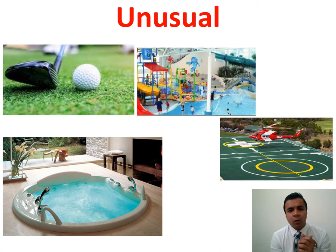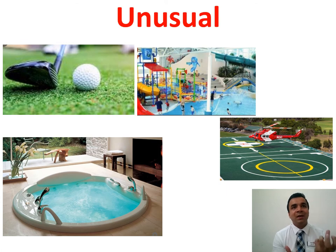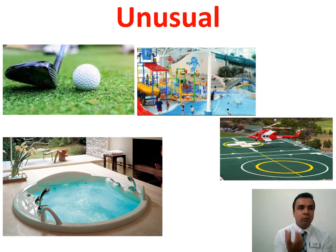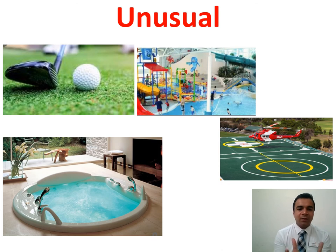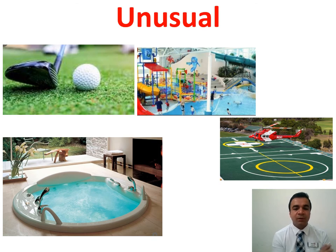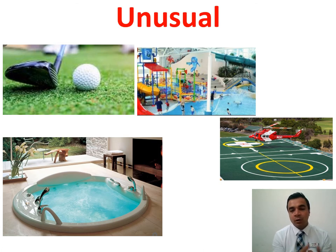The fourth type is unusual complaints — these are complaints that are not usual and the hotel does not have a hold on them. Customers turn up and say, 'You do not have a play zone for kids, you do not have a helipad, you do not have a golf course, your swimming pool is not centrally heated.' We term them as unusual because hotel employees cannot do much about it — they just need to record it and inform their boss, since this is how the hotel was planned and built.